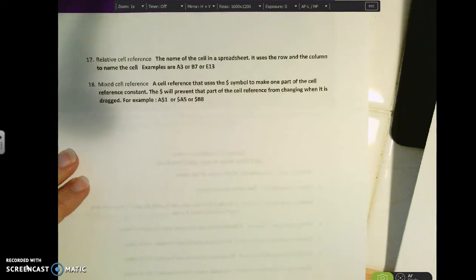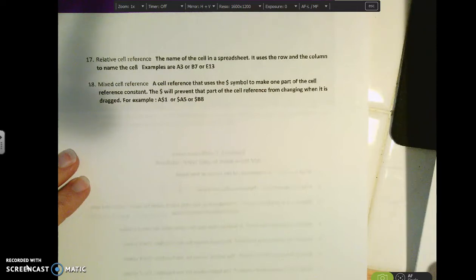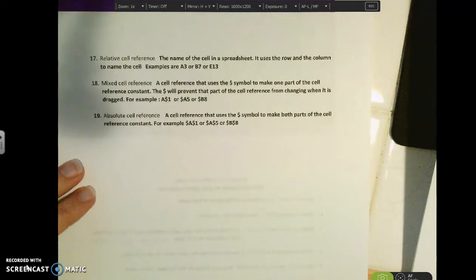So a mixed cell reference uses a dollar sign symbol to make one part of the cell reference constant. So the dollar sign will prevent that part of the cell reference from changing when it's dragged. For example, if I type A and then dollar sign one, that means that when I drag that value, the one will not change. So if I dragged it down, it would stay A1 all the time. If I dragged it to the right, it would become A1, B1, C1 and across. So again, the one is a constant value. In the second example, the dollar sign A5, the A is constant. So if I dragged it down, it would become A5, A6, A7, A8, but it would drag down. The A's would not change. And the dollar sign on the B means that the B will not change. So same as the second one that we just did.